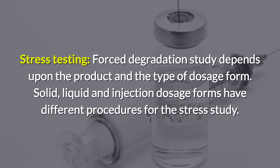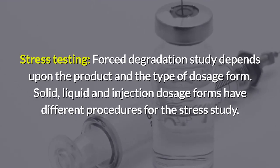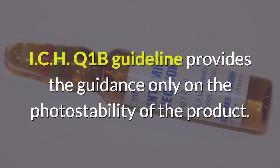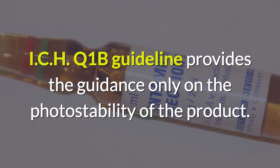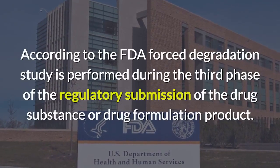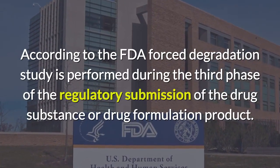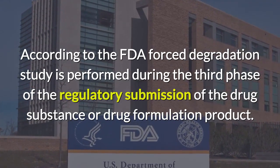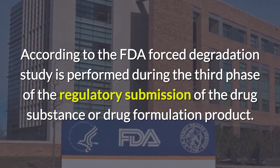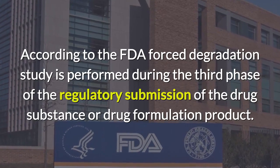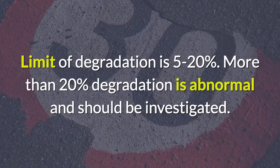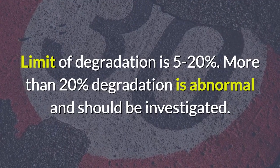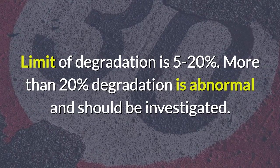Solid, liquid, and injection dosage forms have different procedures for the stress study. ICH Q1B guideline provides guidance only on the photostability of the product. According to the FDA, the forced degradation study is performed during the third phase of regulatory submission of the drug substance or drug formulation product. The limit of degradation is 5 to 20%; more than 20% degradation is abnormal and should be investigated.